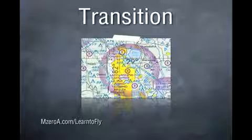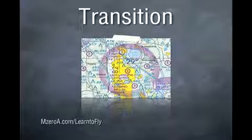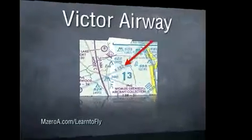Next is a transition area. This is the shaded magenta area surrounding some airports, allowing Class Echo airspace to start at 700 feet.